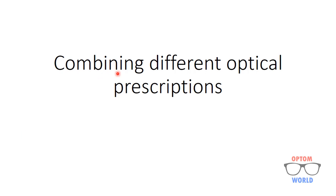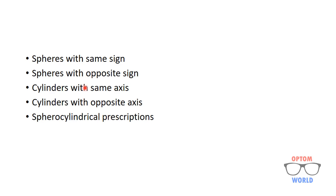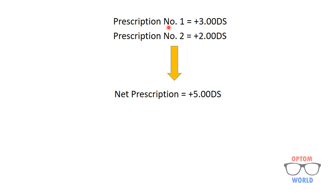In this video we will discuss combining different optical prescriptions. We will consider two different optical prescriptions and then add those two prescriptions to calculate their net prescription. We will do this first by considering only spheres with the same sign, then spheres with opposite sign, then cylinders with the same axis, then cylinders with opposite axis, and finally sphero-cylindrical prescriptions.